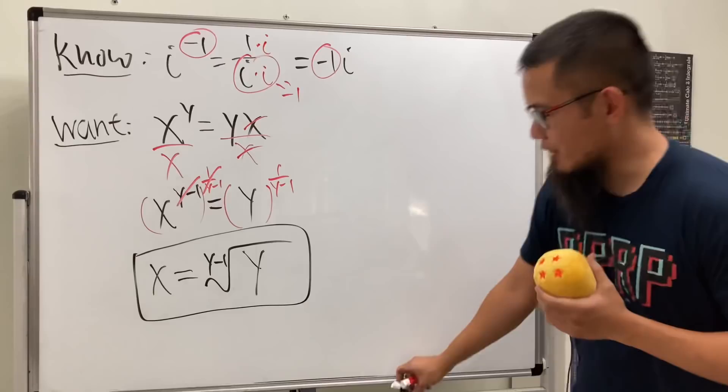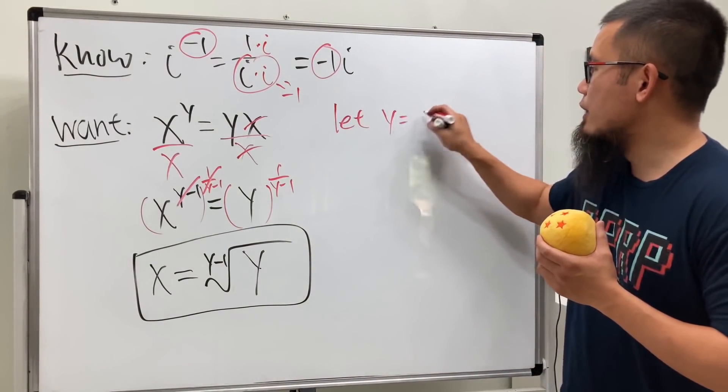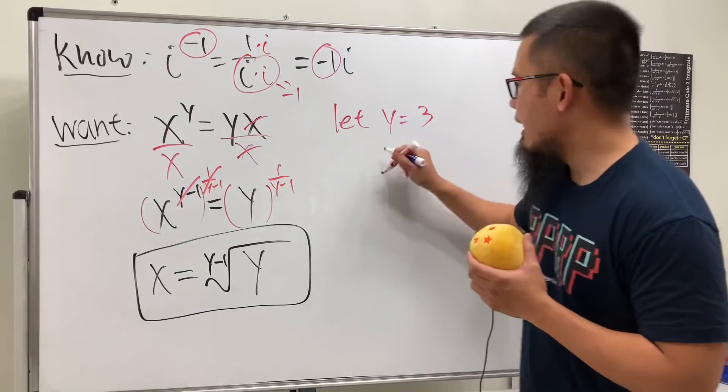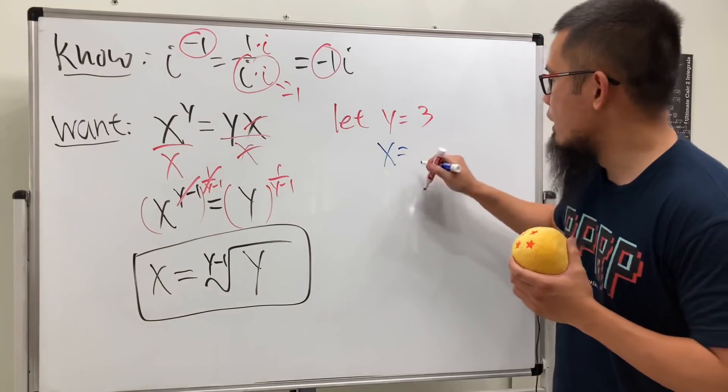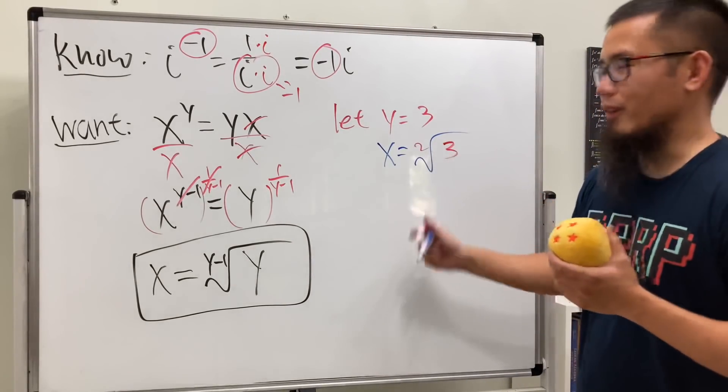And now we'll just do some check. So I'm going to pick some number for y, let's say that y equals 3, because this way you can see that x will be what? x will just be equal to square root of 3 minus 1, which is 2, and then 3 inside, namely square root of 3.